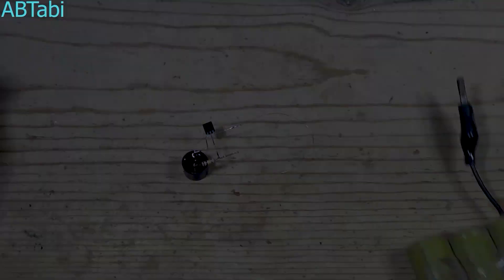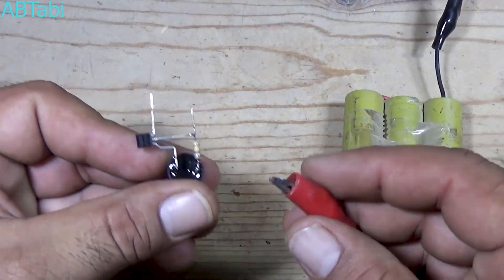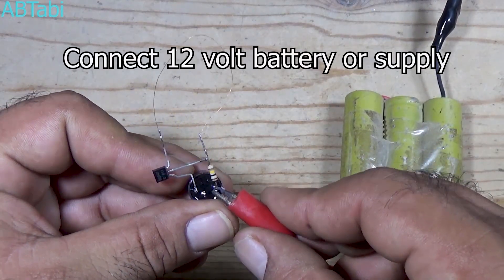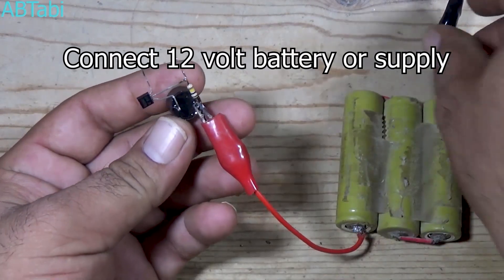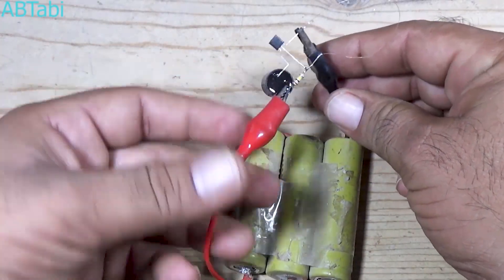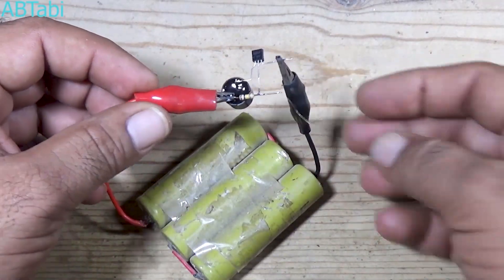Just extend the thin wire and place it in a position where a person, object, or animal must pass through. Because the wire is very thin, it is almost invisible. And when someone crosses it, the wire breaks, and the alarm starts ringing immediately.